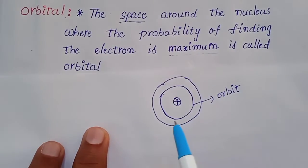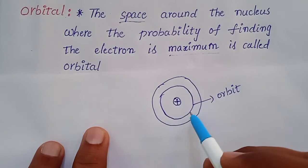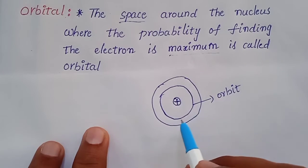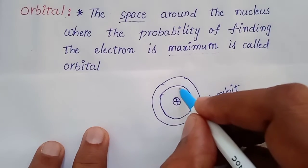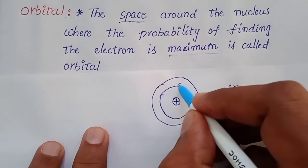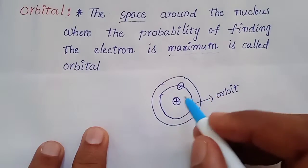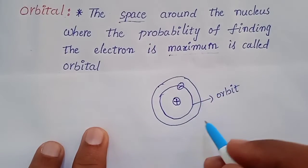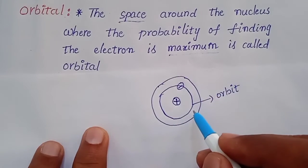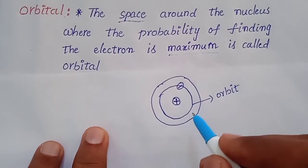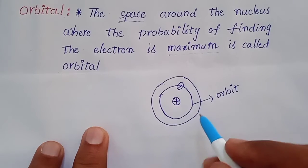What is an orbit? An orbit is a circular path around the nucleus in which electrons revolve. This is like planets revolving around the sun in a fixed manner.